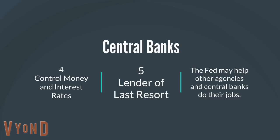Number four, the central bank controls the money supply and interest rates. And number five, the central bank is the lender of last resort. That means when the economy goes bad, it's up to the central bank to make sure that money is in the system so people can make transactions, and that people who qualify for loans can find someone to loan to them.